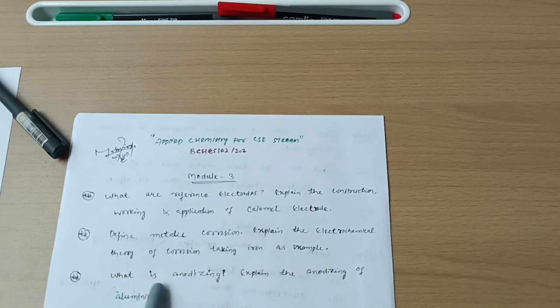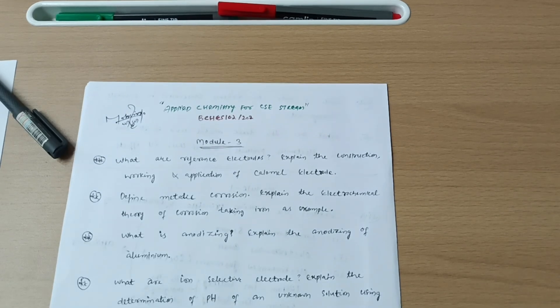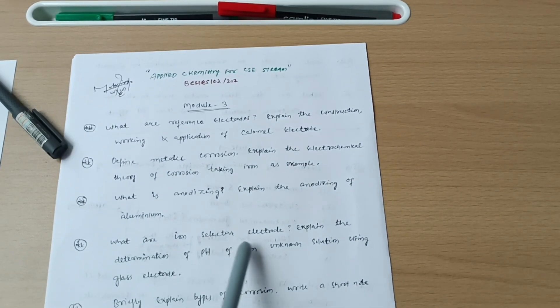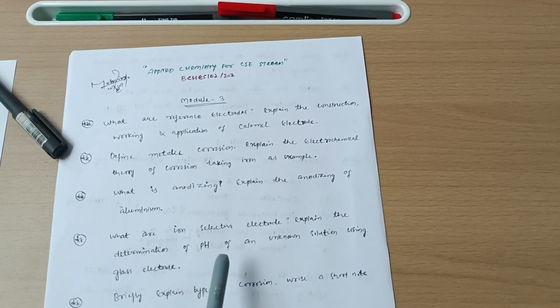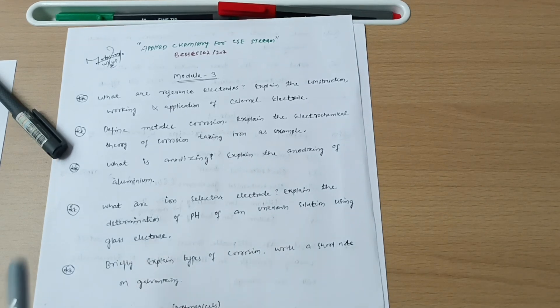Next is what is anodizing? Explain the anodizing of aluminium. Next possibility may be what are ion selective electrodes? Explain the determination of pH of an unknown solution using glass electrode. Sometimes they will ask you the construction and working principle of glass electrode, so you should go through it also.